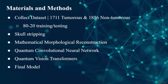For our materials and methods, we start by collecting a dataset of 1,711 tumorous and 1,856 non-tumorous MRI images, split into an 80/20 training-to-testing ratio, filled with various tumor shapes, types, and orientations. The images go through a pre-processing skull stripping algorithm to isolate the brain, then act as input to the MMR, QCNN, and QVT algorithms. Our main goal is to extract the best features of the models to increase diversity for different kinds of tumors, since MMR's principle is based on shape and structure analysis, while the QCNN and QVT are based on classification to recognize patterns and complex data.